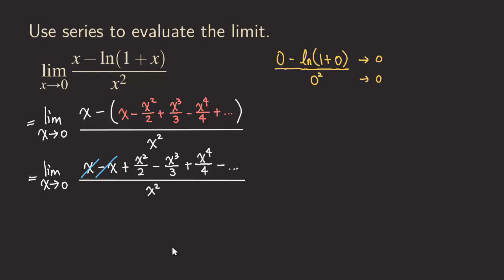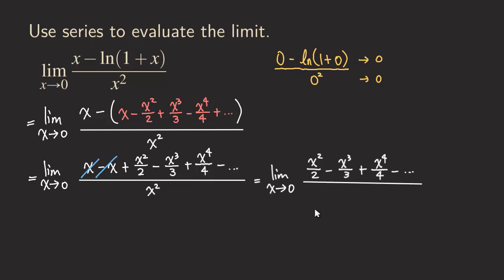Now we clean up this expression. The x minus x cancels out, leaving zero. So our leading term in the numerator is x²/2, giving us x²/2 minus x³/3 plus x⁴/4 minus and so on, all over x² in the denominator.